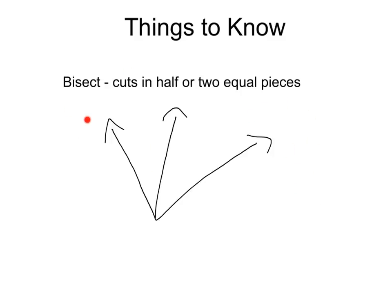The term bisect means that something cuts something in half for two equal pieces. If this ray here was a bisector, it means that these two angles would be congruent because it's cutting the big angle exactly in half.